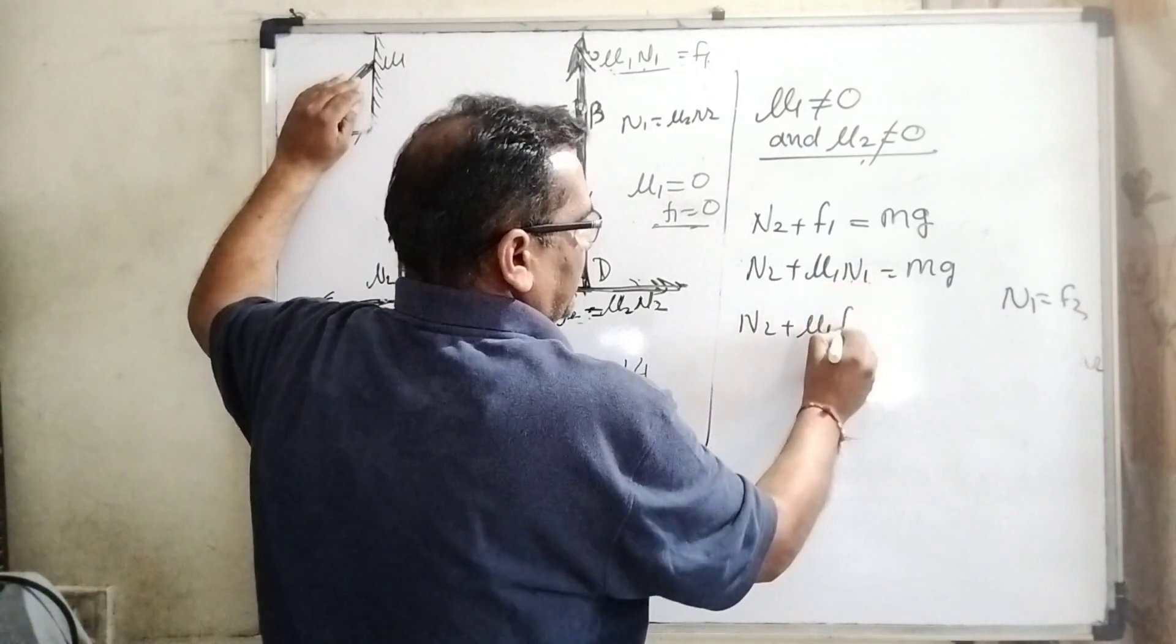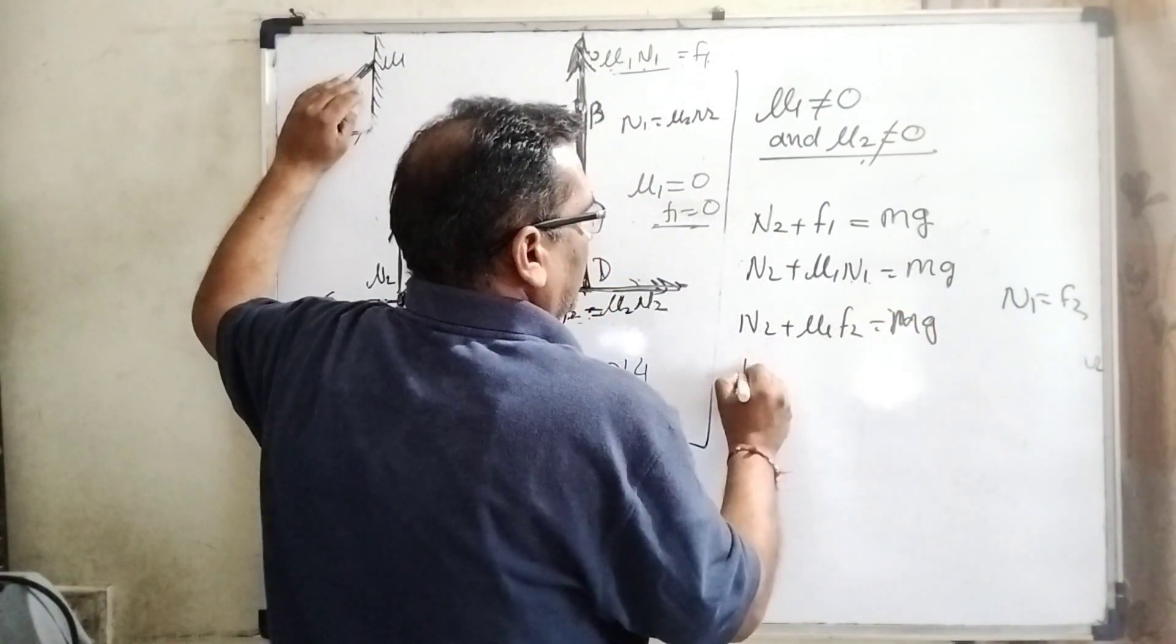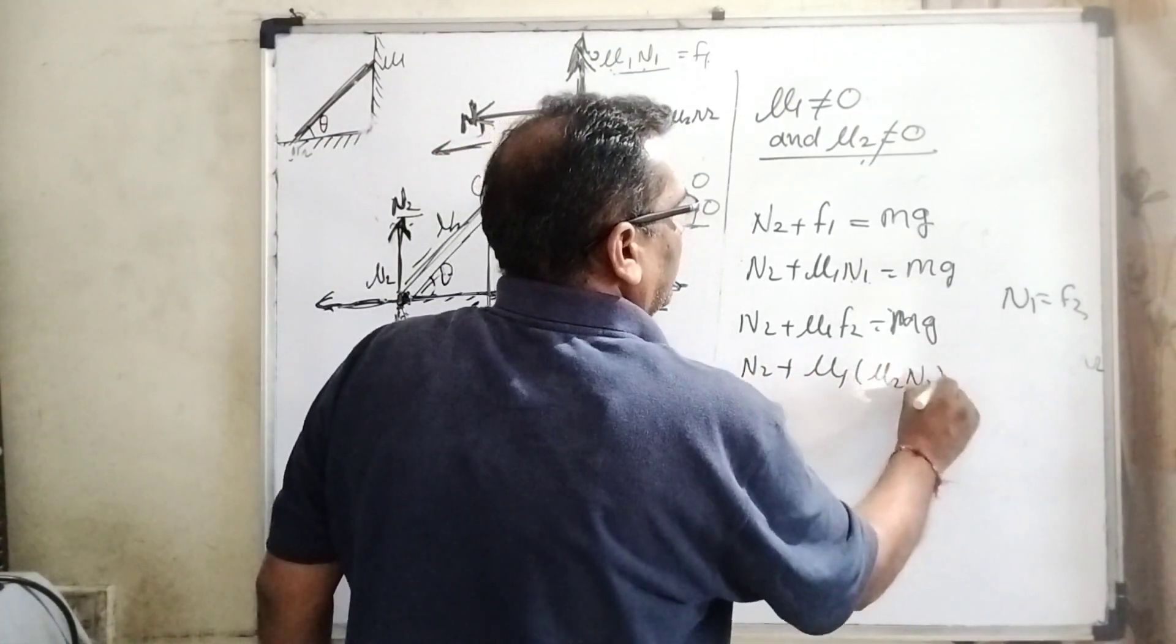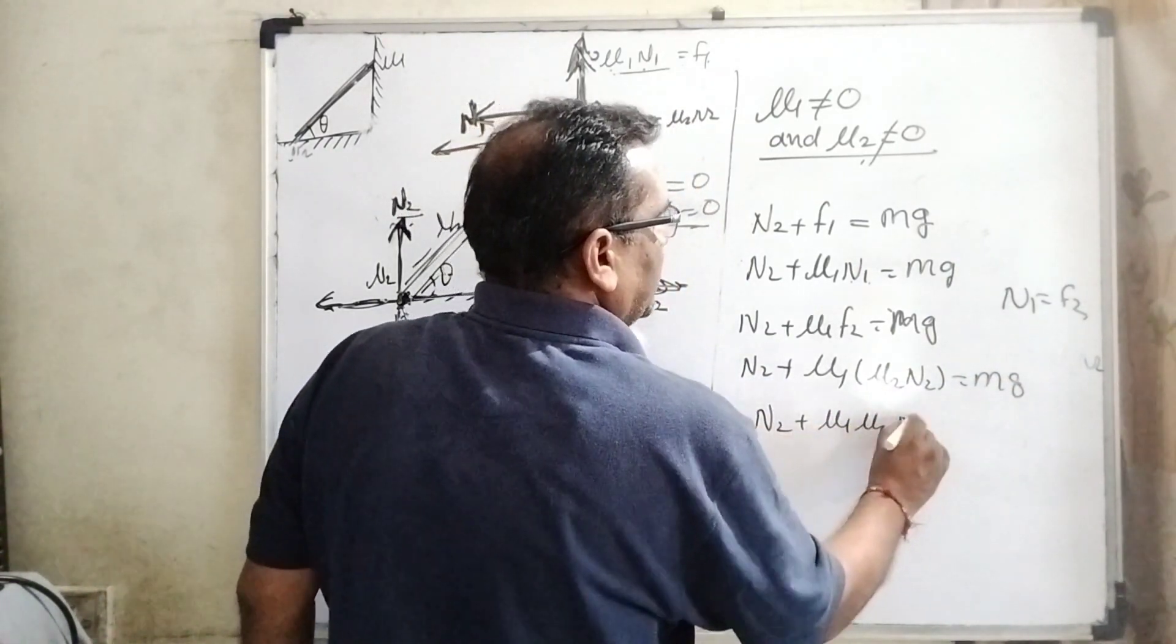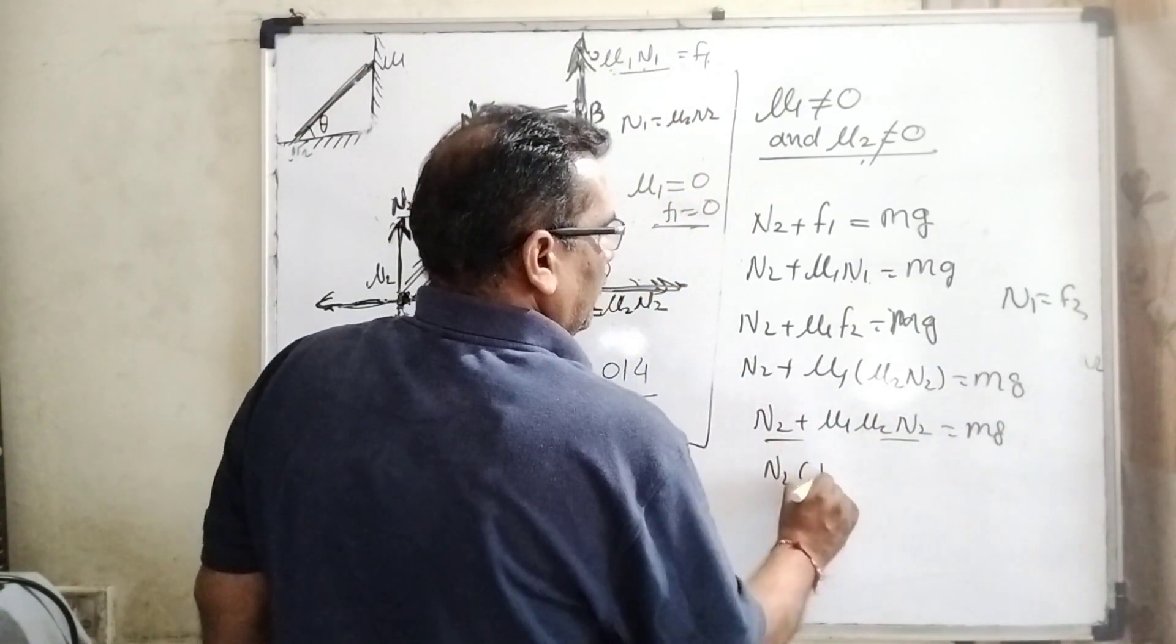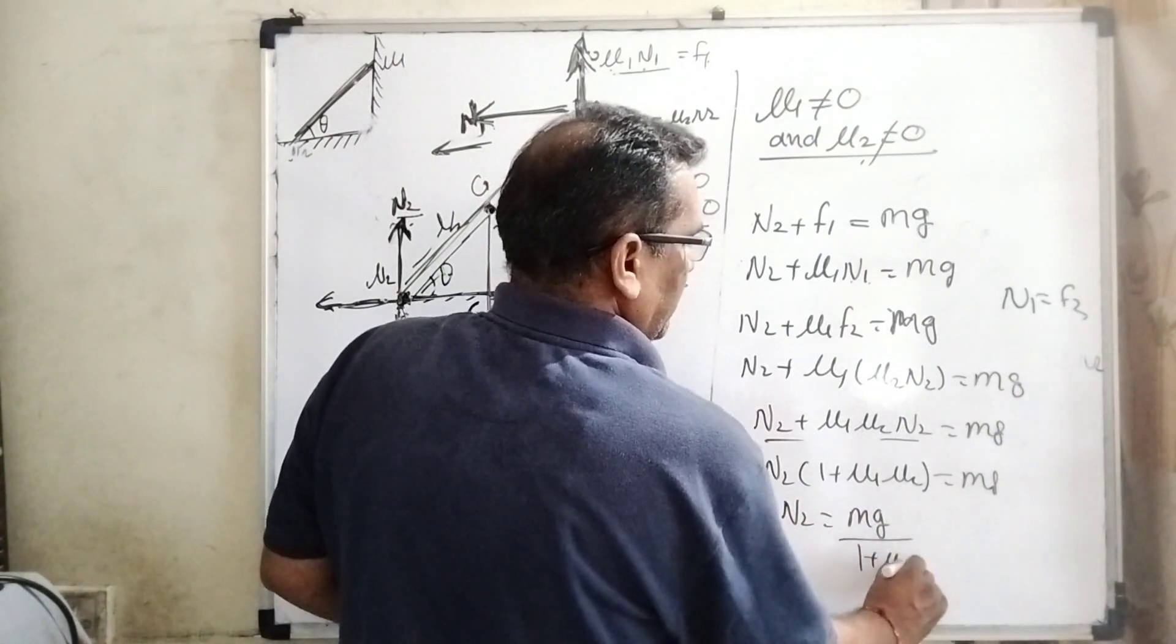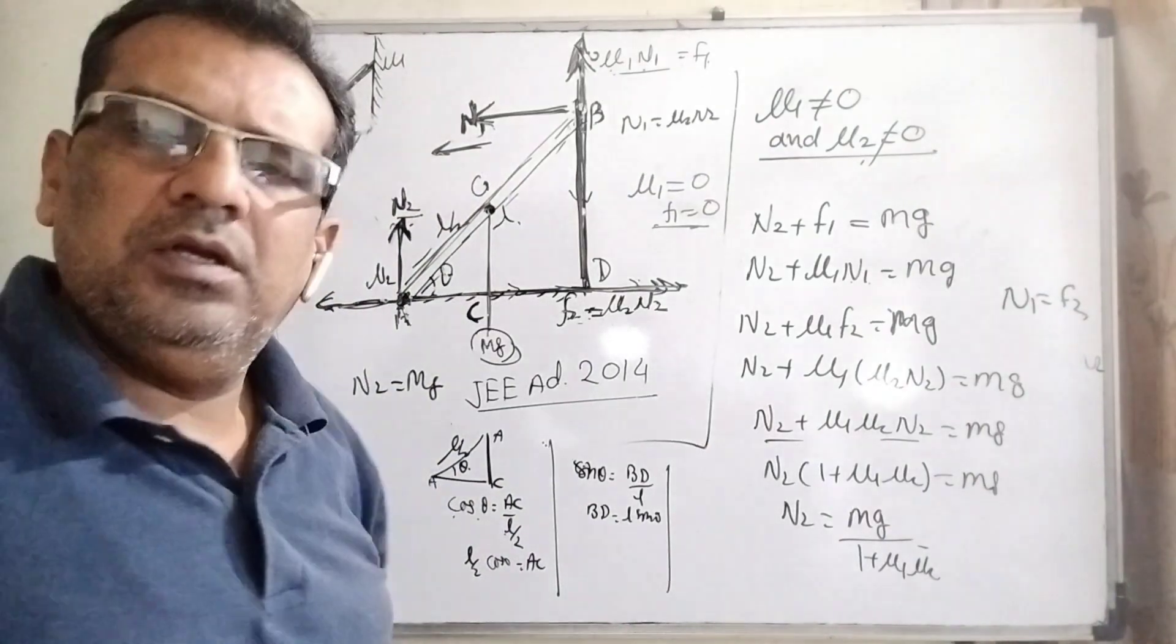And in the place of N1, we substitute f2. But f2 equals mu2 N2. So N2 plus mu1 times f2, but f2 equals mu2 N2, equals mg. Then N2 plus mu1 mu2 N2 equals mg. Then N2 gets common: 1 plus mu1 mu2. N2 equals mg by 1 plus mu1 mu2.